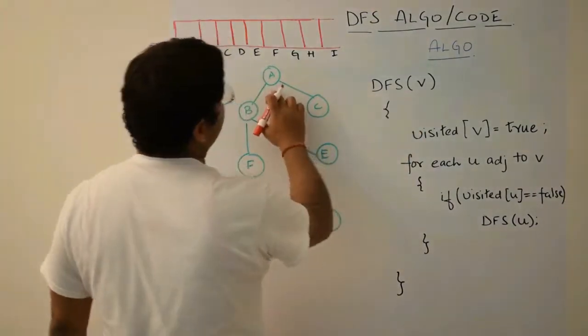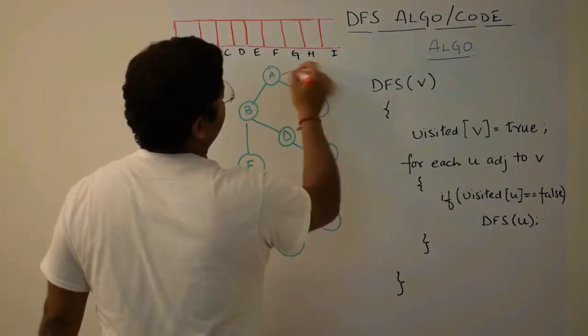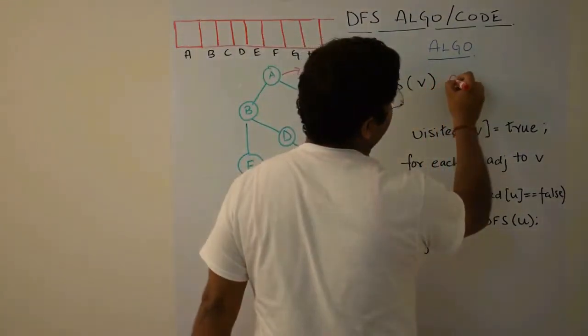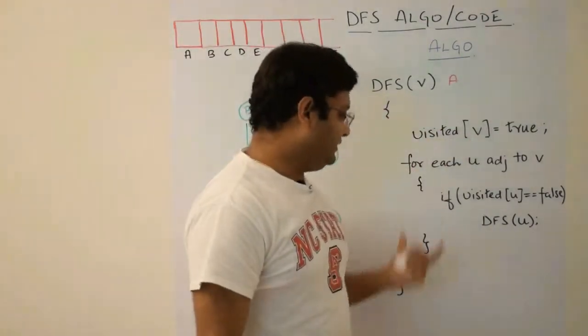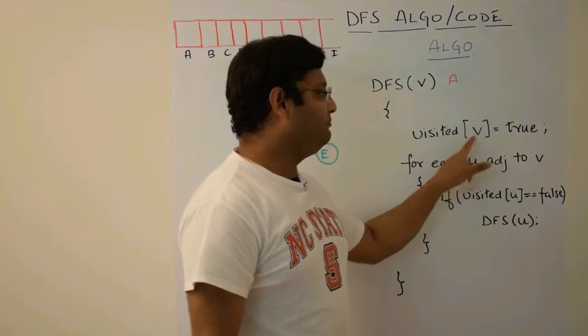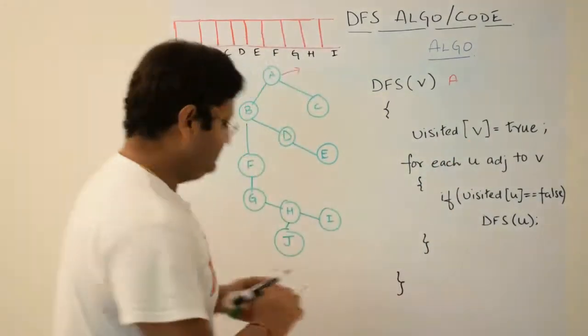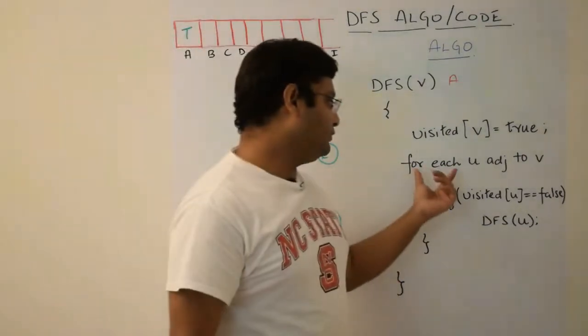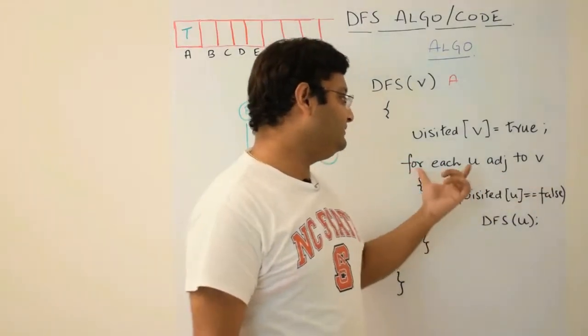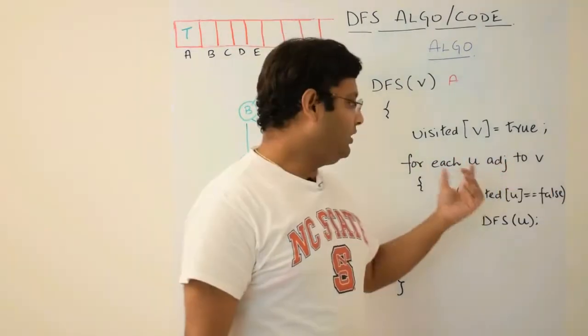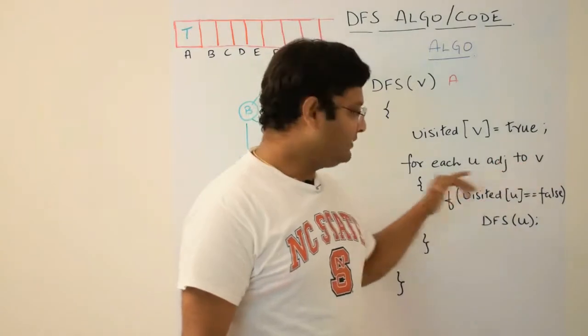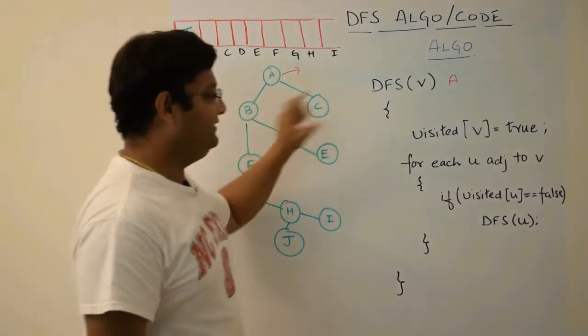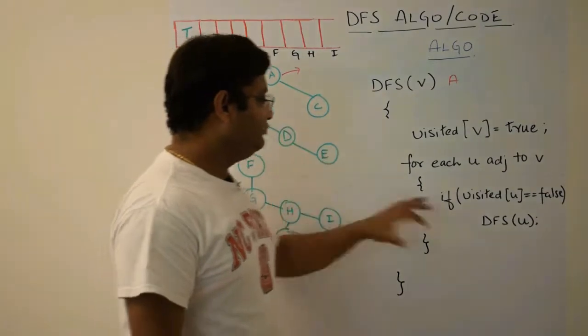Now it is accepting an argument. This argument is nothing but a vertex of the graph. Here we have an array called visited. The position in this array denoted by this vertex tells us whether this vertex has been visited or not. If it is true, then it means it is visited. If it is false, it means it has not been visited. So let's start tracing out this algorithm. Suppose we'll start our algorithm at this point A. Here we'll start this our DFS algorithm.